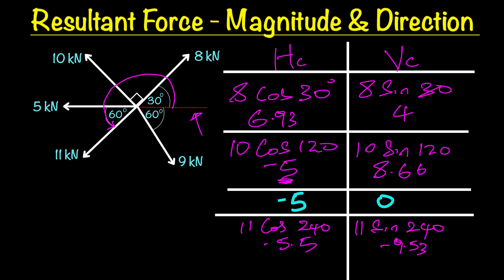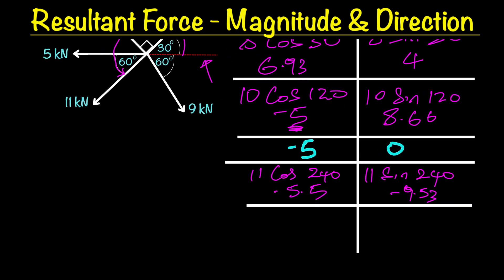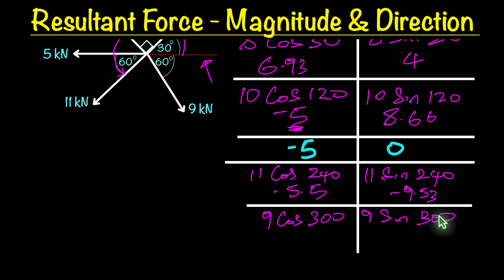Please ensure you stick around to the end because after we finish the force components, we're going to work out the magnitude and direction. Our final force is the 9 kilonewtons, which is 60 degrees from our reference line at the bottom, so all the way around that's 300 degrees. Inputting 9 cos 300 and 9 sin 300 gives us 4.5 for horizontal and negative 7.79 for vertical.